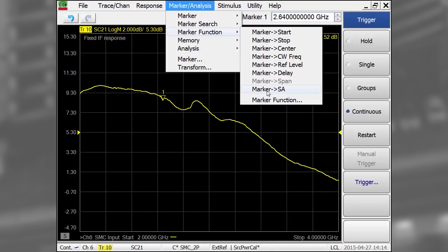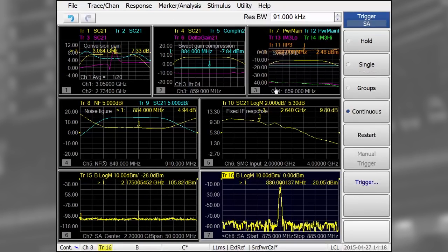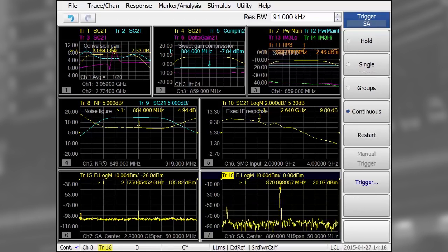Using the marker to SA feature again, I can open a new window with a new spectrum analyzer channel. Again, I see a fixed output signal. Next, I'll set the input and LO signals to sweep, which creates a fixed IF measurement.